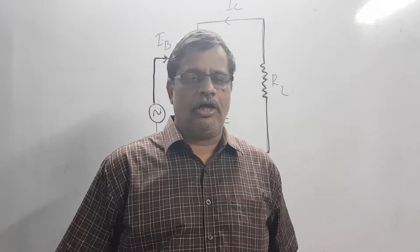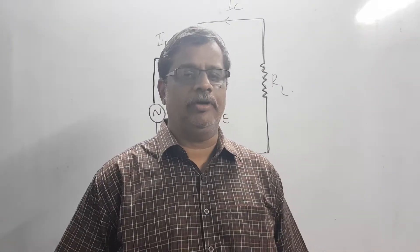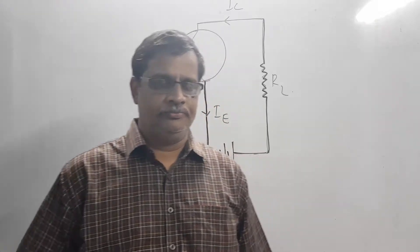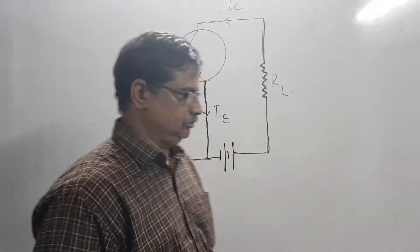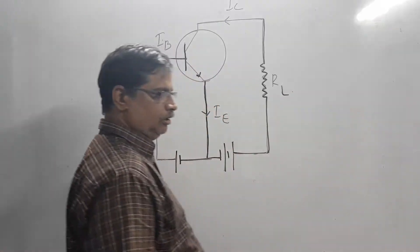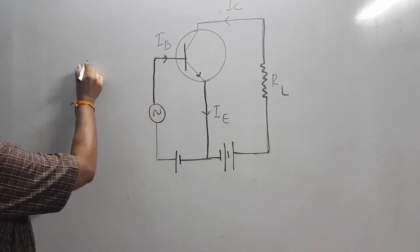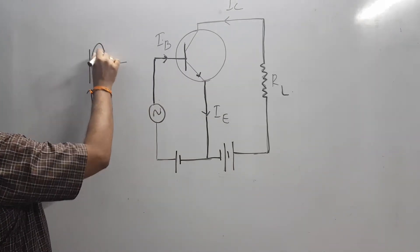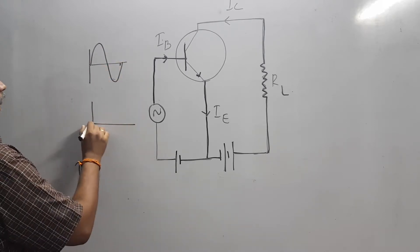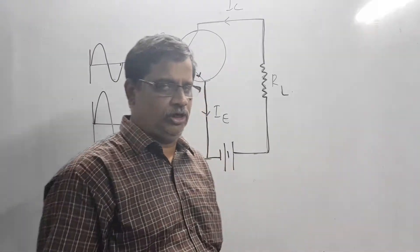Here we will discuss how a transistor works as an amplifier. The transistor has many applications, and one of the most important is in the field of amplification. Amplification is basically the process of raising the strength of a weak signal without changing the overall shape of the signal. If I have a signal and amplify it to get an output of the same shape, I can say I have amplified the signal faithfully.